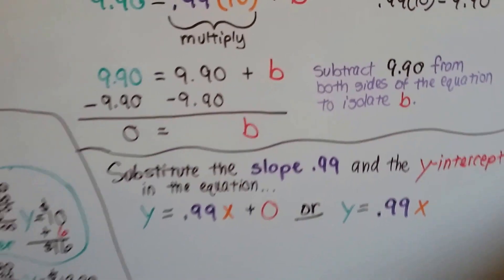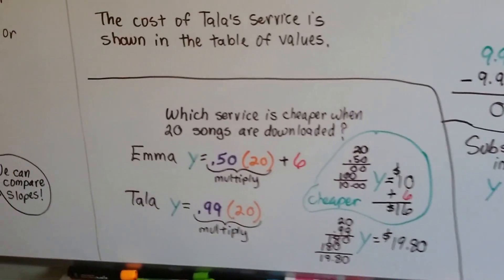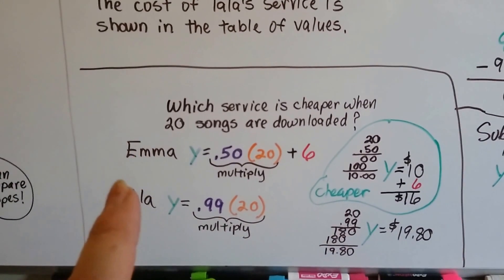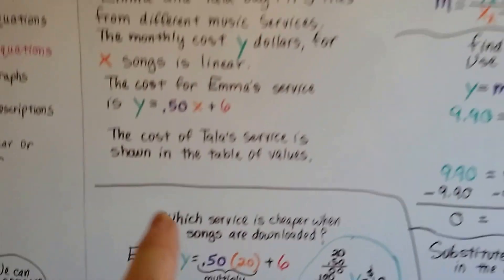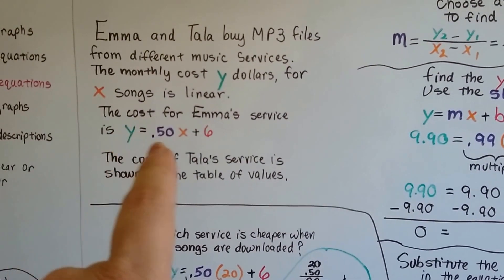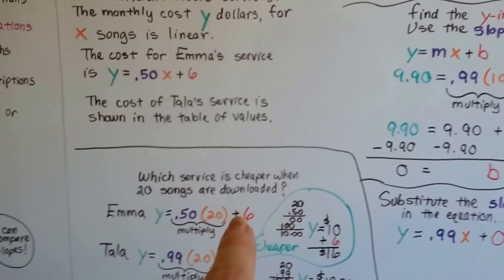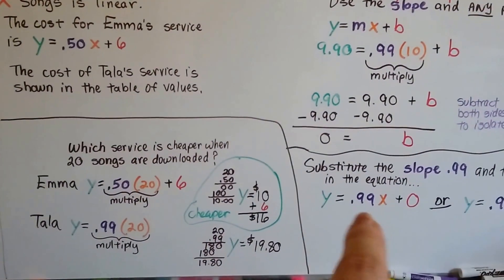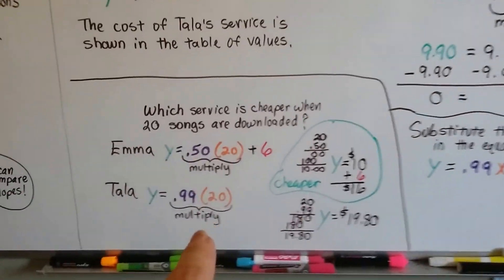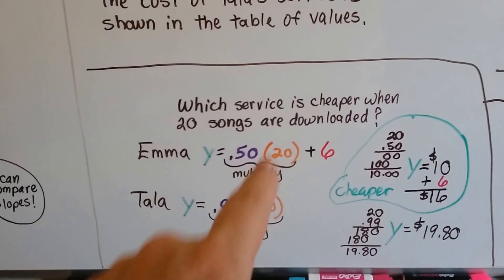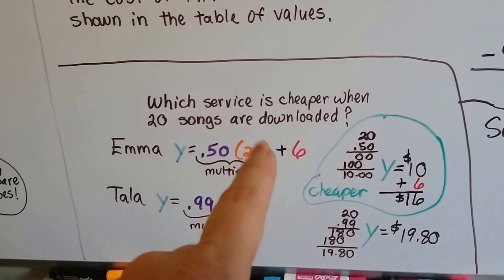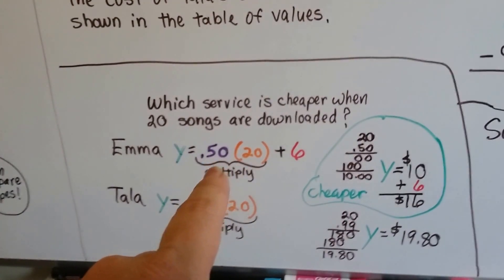Now, we need to figure out which service is cheaper when 20 songs are downloaded. We have Emma's equation, y equals .50x plus six, and we have Tala's equation, y equals .99x, and we plug the 20 in for x, and we multiply.